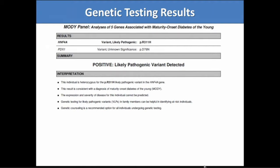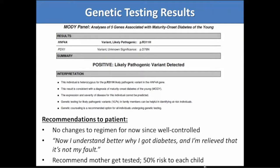In retrospect, some features of her story fit with HNF MODY: HNF1-alpha and HNF4-alpha patients tend to be very sensitive to sulfonylureas, which probably explains the hypoglycemia she experienced. For this patient, she was already really well-controlled with an A1C of 5.7%, so the diagnosis didn't change her diabetes management immediately. But she was really happy to get the diagnosis — she said, 'Now I understand better why I got diabetes and I'm relieved that it's not my fault.' Understanding why she had it was really empowering for her, and she was very eager to have other family members get tested and thinking about starting a family and the risks for her children.